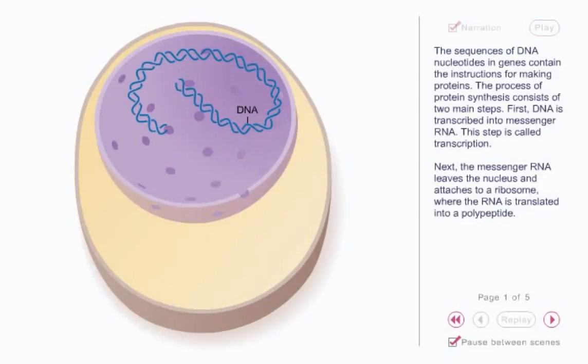The sequences of DNA nucleotides in genes contain the instructions for making proteins. The process of protein synthesis consists of two main steps.